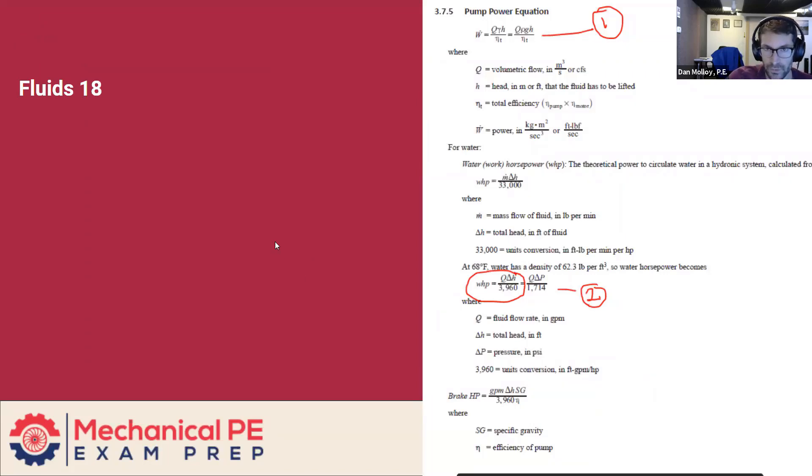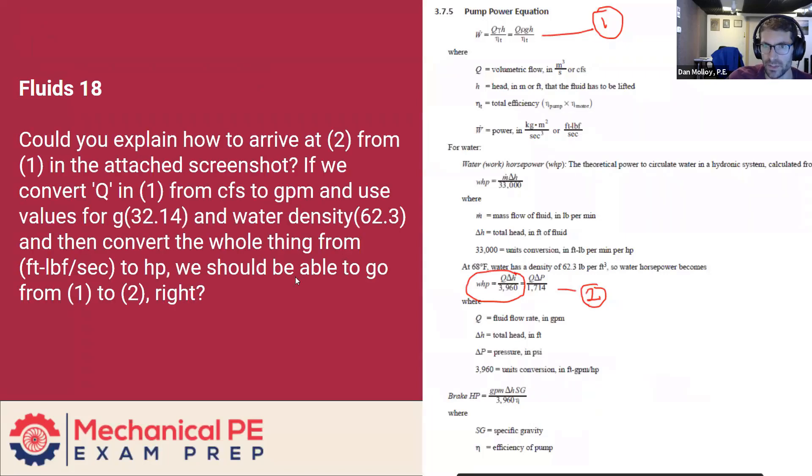All right, next one is from Fluids18, but it's not so much a question about Fluids18 per se, and more a general question that is born from attempting to solve that problem. So I'll deal with the general question. Could you explain how to arrive at equation two, which is this water horsepower equation from one in the attached screenshot?